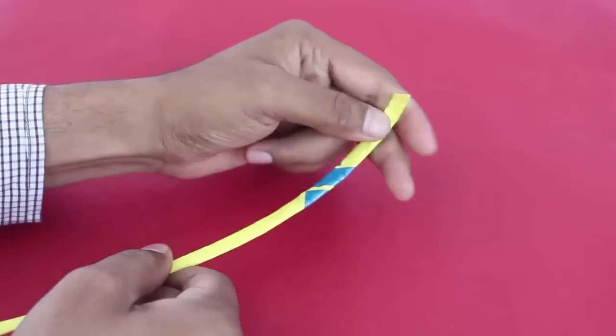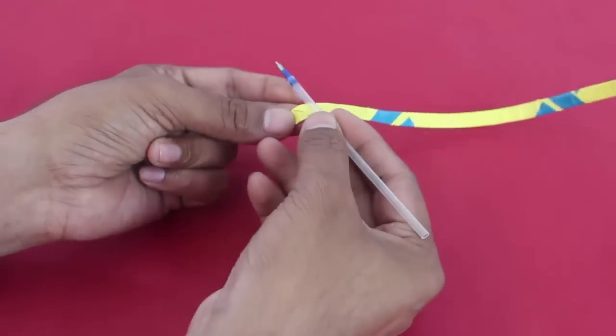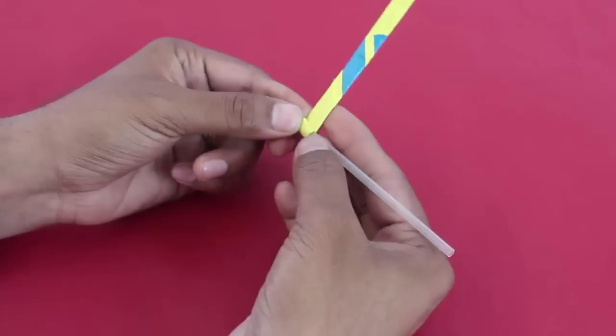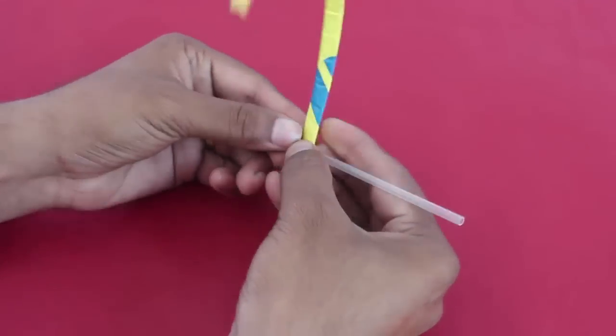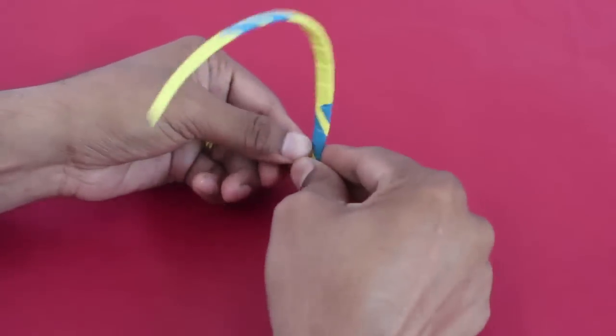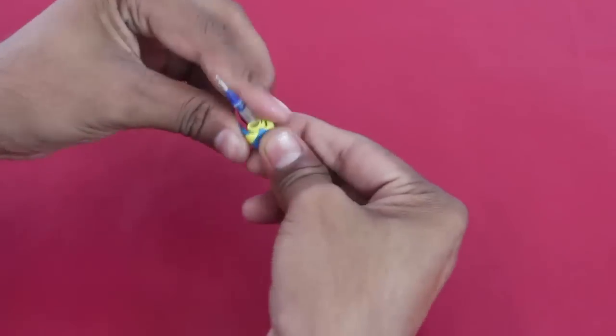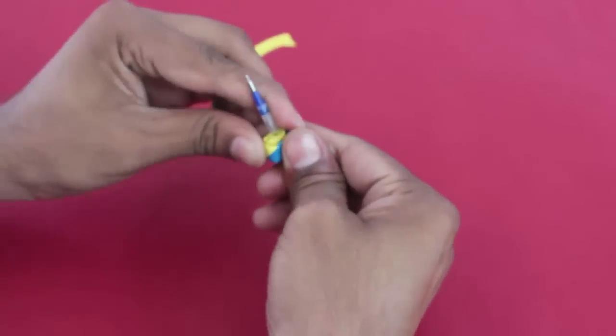Then leave about a cm from the tip of the refill and fold the flat paper tube tightly on an old ball pen refill. This will make the disc of the top.